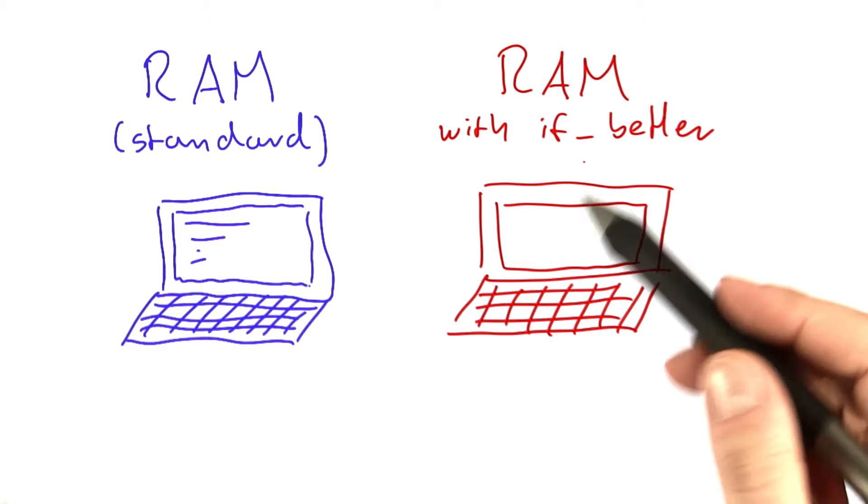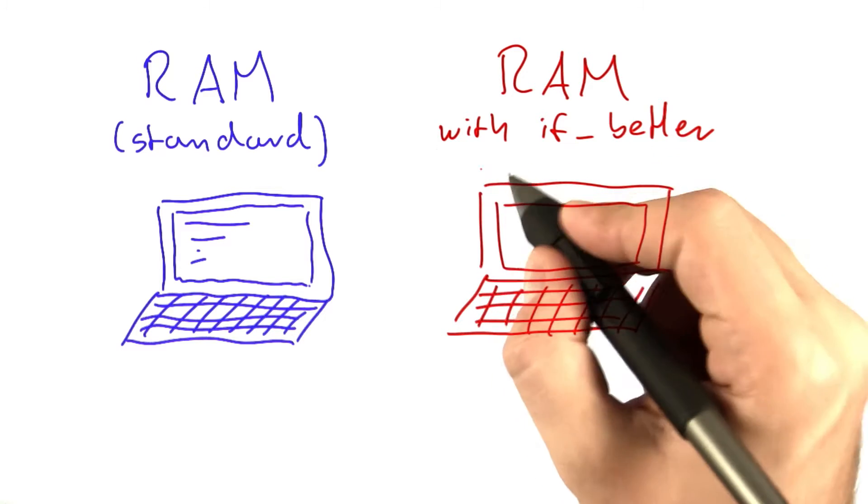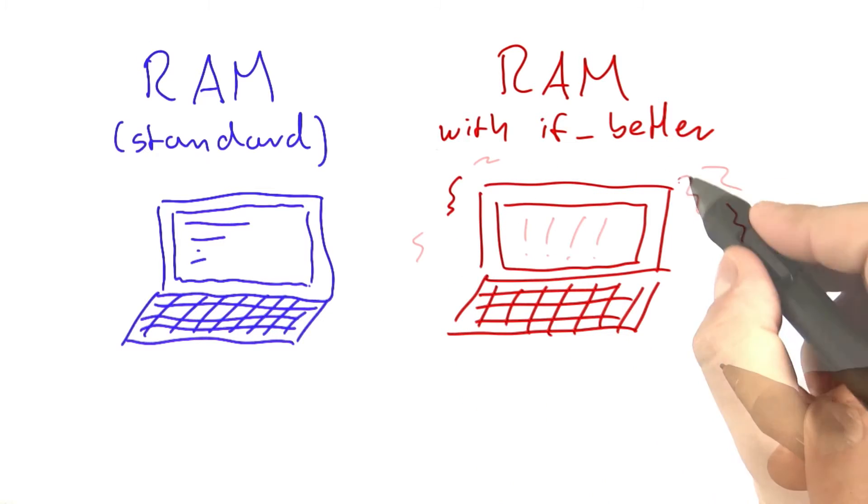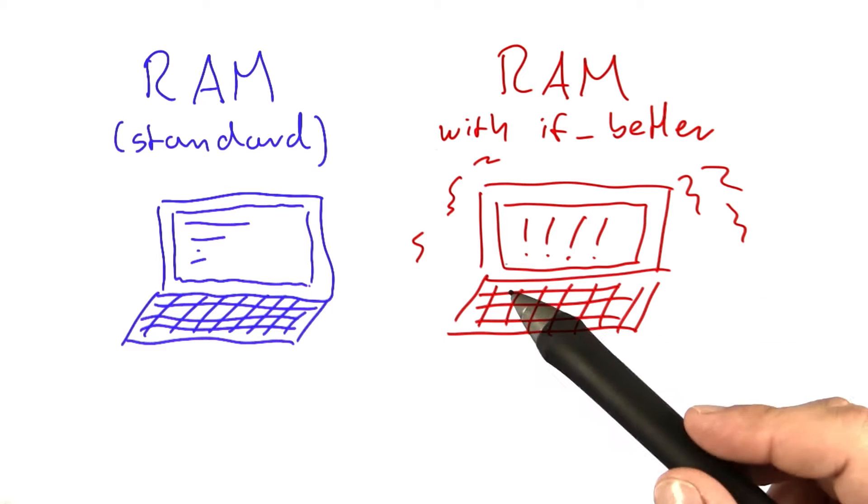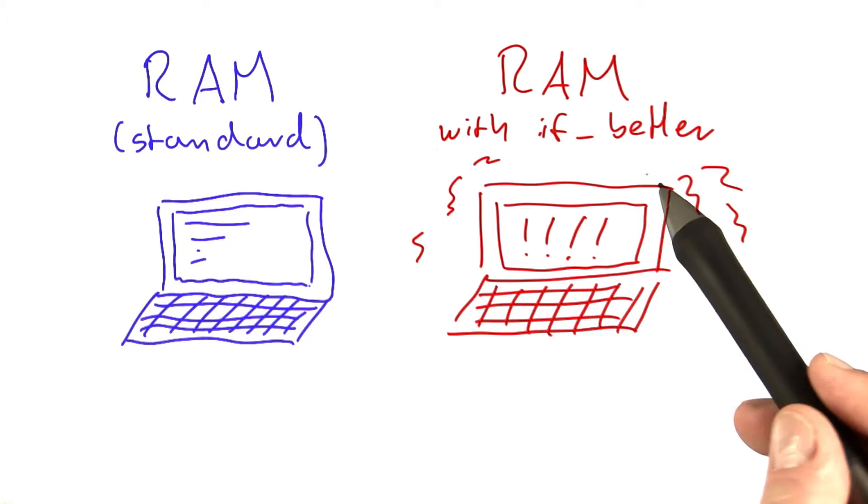And here on the right side we have the RAM with the if better function, and this of course is a much more powerful machine. As you can see it's buzzing with computational power here, and this is totally unlike your standard computer because it has this guessing function built in.